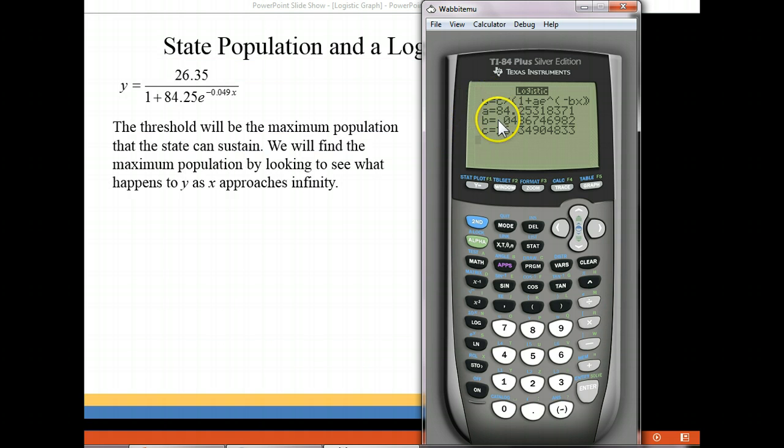So putting it together we have 26.35 for our numerator, 84.25 for our coefficient of e, and about 0.049 for our coefficient of x. And that was a negative b so there's a negative in front there. So now what we want to do is work with our equation and we're going to also graph it on our graphing calculator.